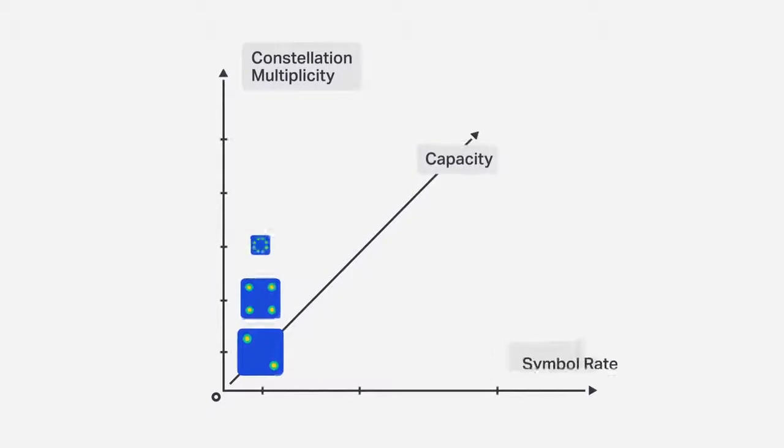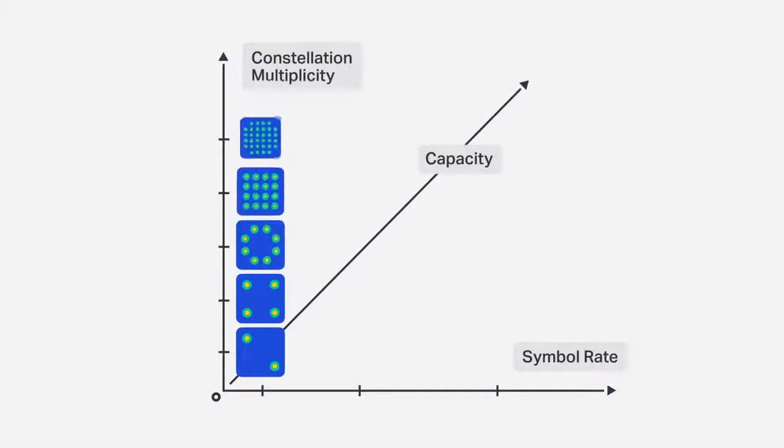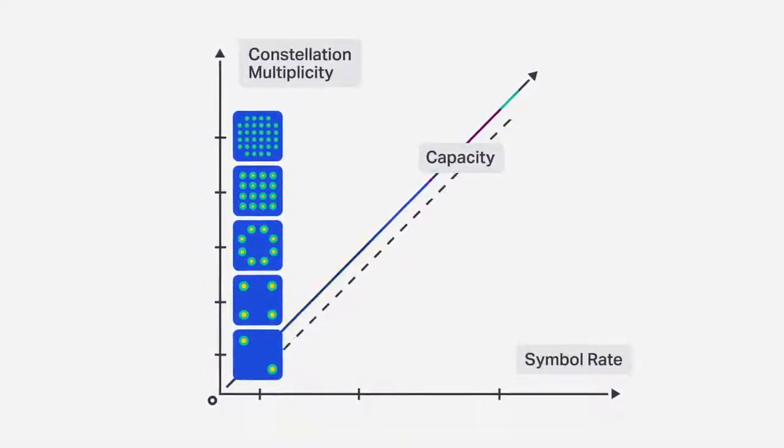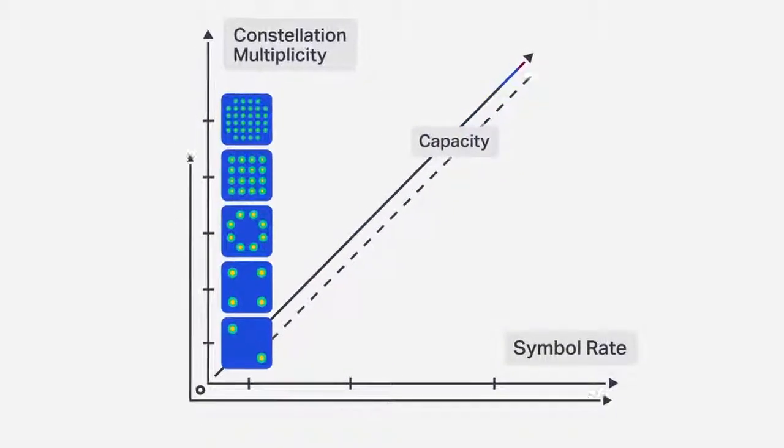The right economics can be achieved by moving to higher single channel optical line rates. You can increase the capacity of the wavelength in two ways: by increasing the baud rate or by using a richer constellation.